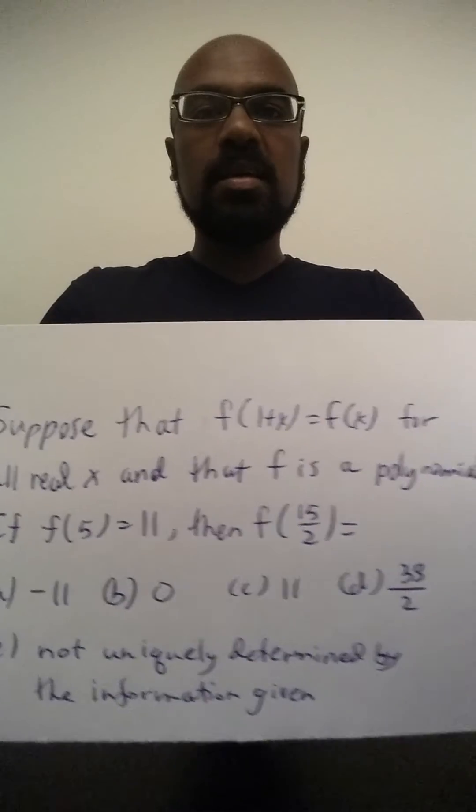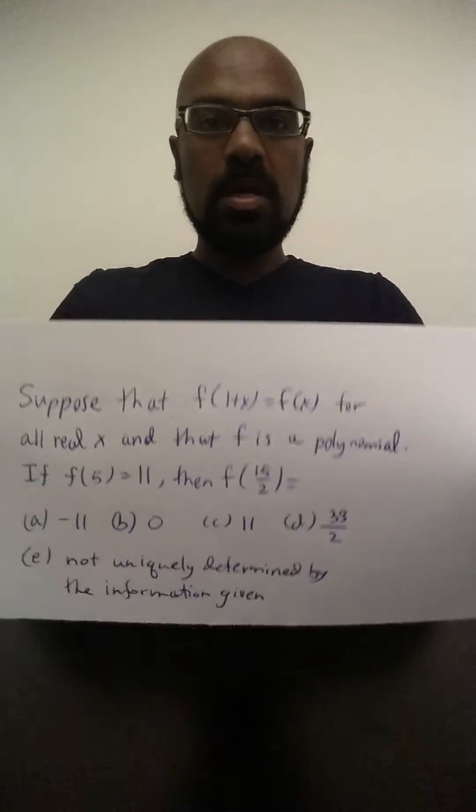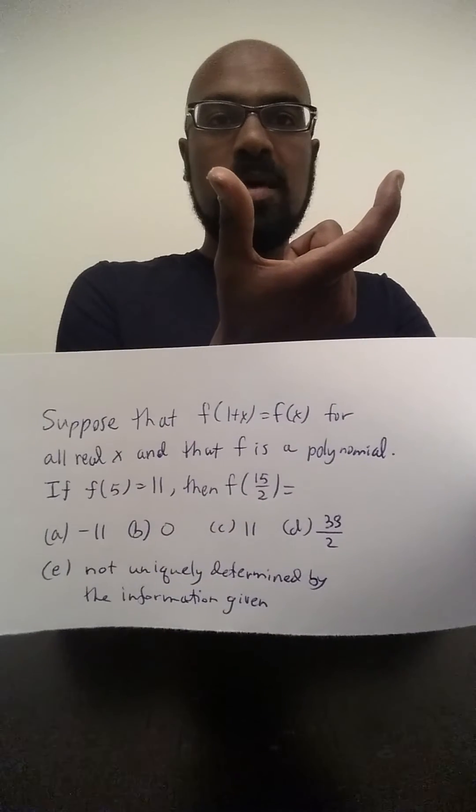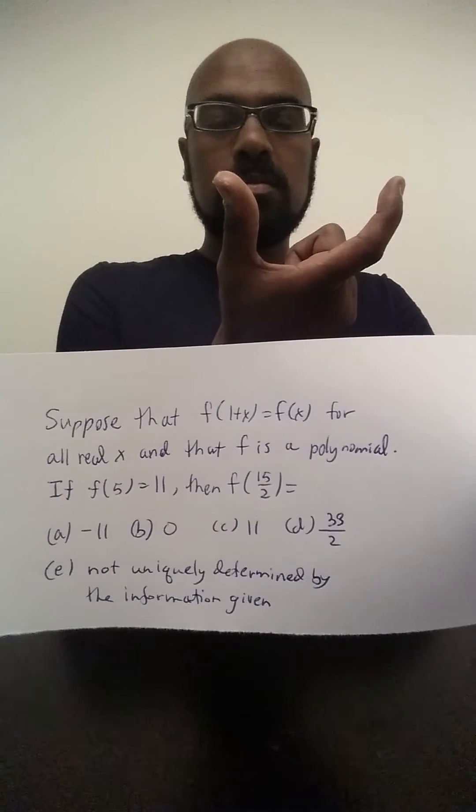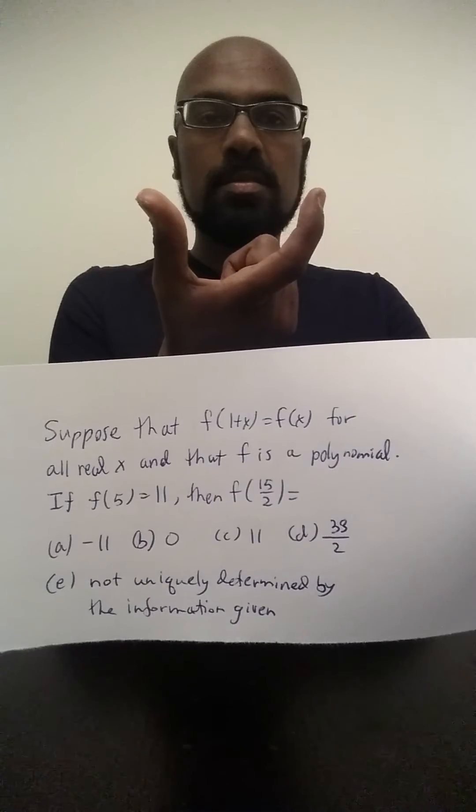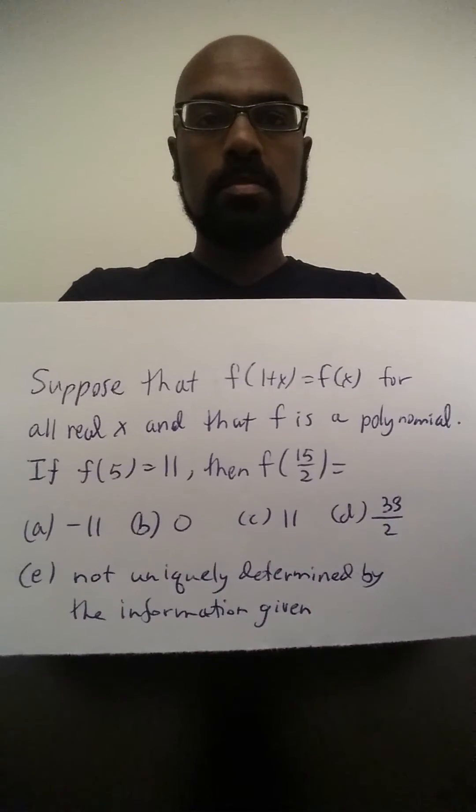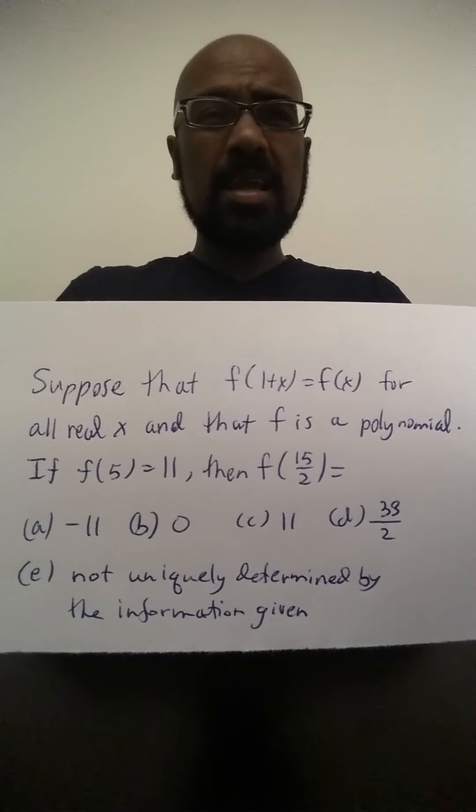So what this is saying then is we have a polynomial whose graph is the same when you start as it is after you shift it in the negative direction by one. Can that actually happen?